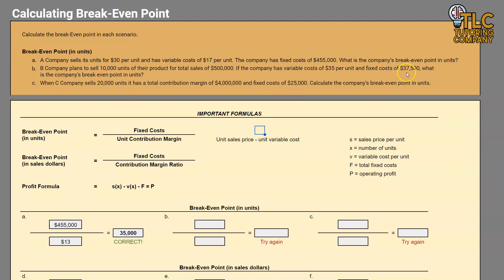For example B, first we need our fixed costs — they give us $37,500 directly as a total, which goes in the numerator. For the denominator we need the unit contribution margin, which requires unit sales price and unit variable cost. They give us unit variable cost of $35 per unit, but they do not directly give us sales price per unit. We'll use the 10,000 units and total sales of $500,000 to calculate it. To convert a total into a per-unit amount, divide the total dollar amount by the applicable units.